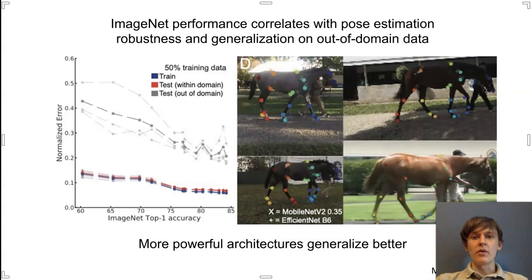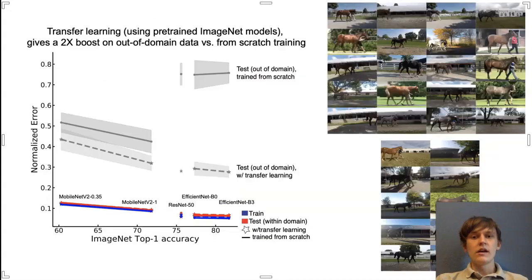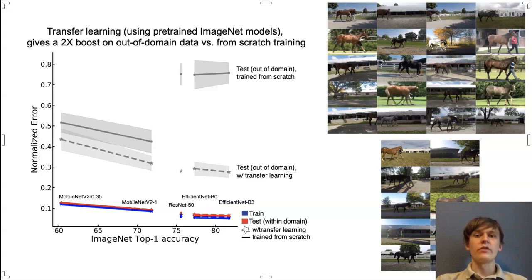In addition to evaluating model architecture, we evaluated the importance of pre-training on ImageNet. It was clear that pre-training on ImageNet is crucial for out-of-domain performance. The solid gray line here is the performance of a model trained from scratch. Clearly, the model trained from scratch performs nowhere near as well as the model that was pre-trained on ImageNet on out-of-domain data.